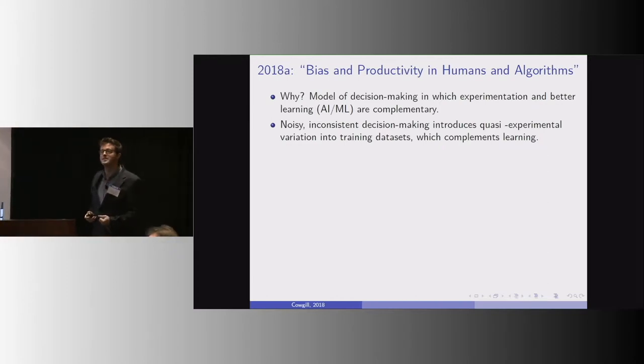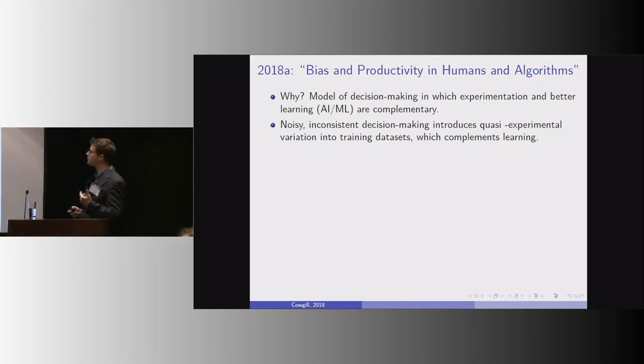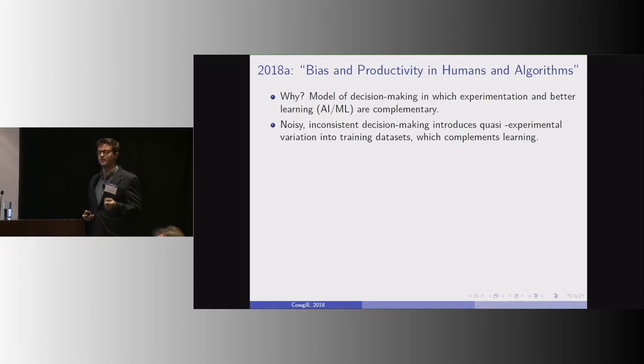So these noisy decision makers are basically putting A-B tests into our training data. And that turns out to be really useful for debiasing algorithms, even if the overall trend is on the side of bias.